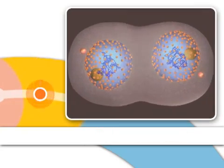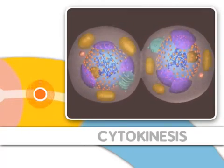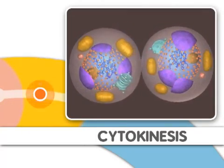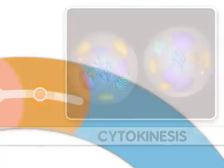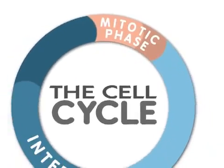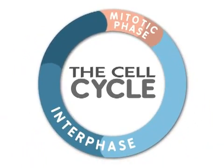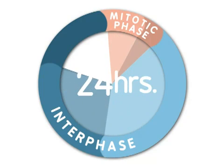After mitosis, two new cells are formed by a process called cytokinesis. Mitosis is only one part of what is called the cell cycle. For many eukaryotic cells, a cell is duplicated every 24 hours.